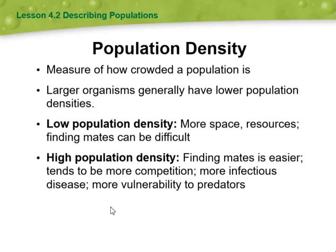There are two types of density: low population density and high population density. The difference between them is that low population density means more space and resources, but finding mates will be difficult. With high population density, finding mates is going to be easier, but it is more competitive, with more infectious diseases and vulnerability to predators.